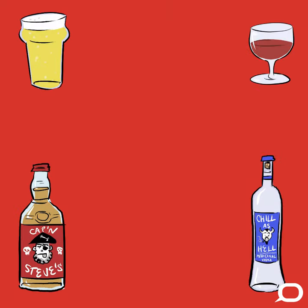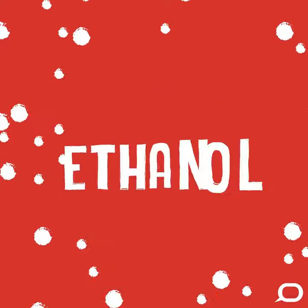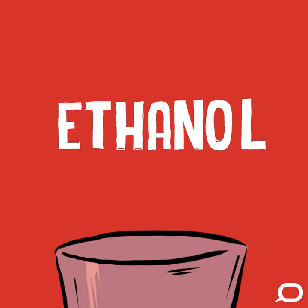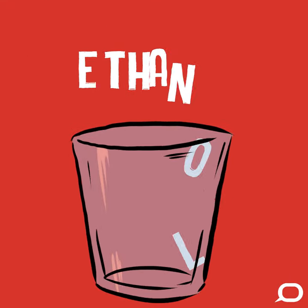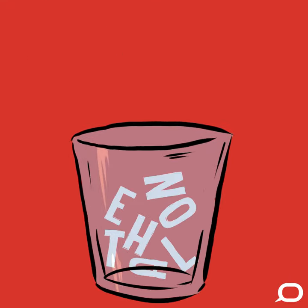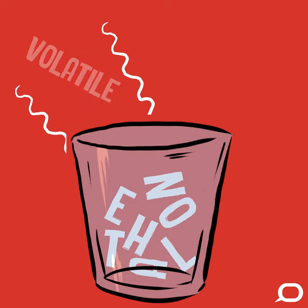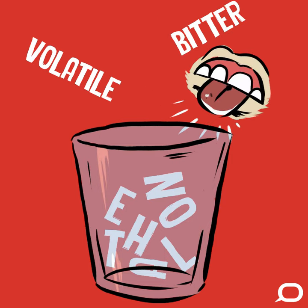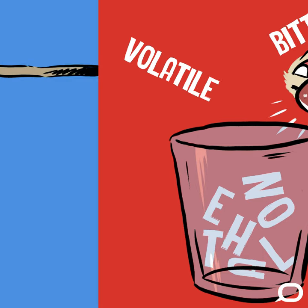All of the different kinds of alcohol we drink are ethanol based. Ethanol, also known as ethyl alcohol, is a clear volatile liquid that has a pungent bitter taste.